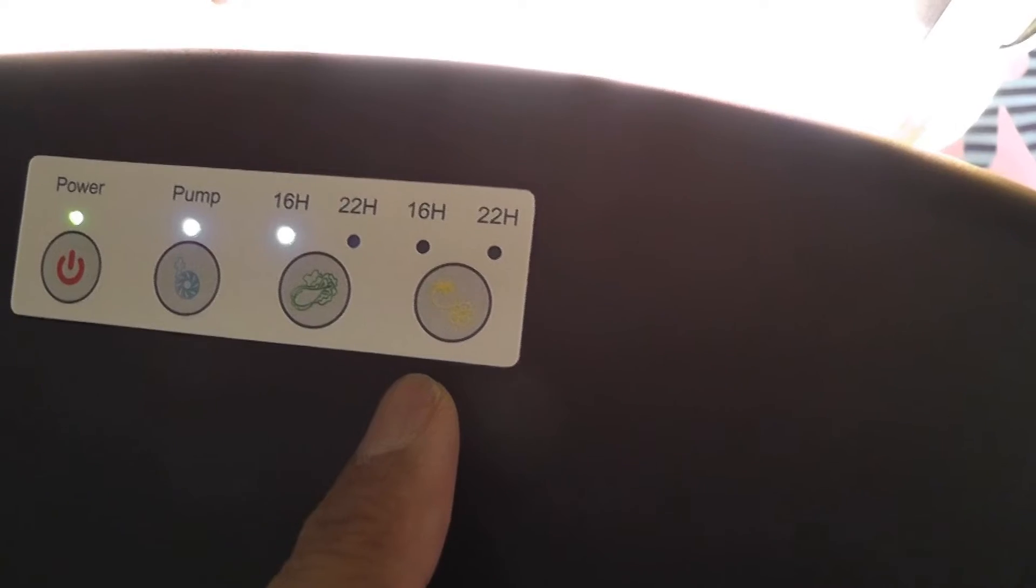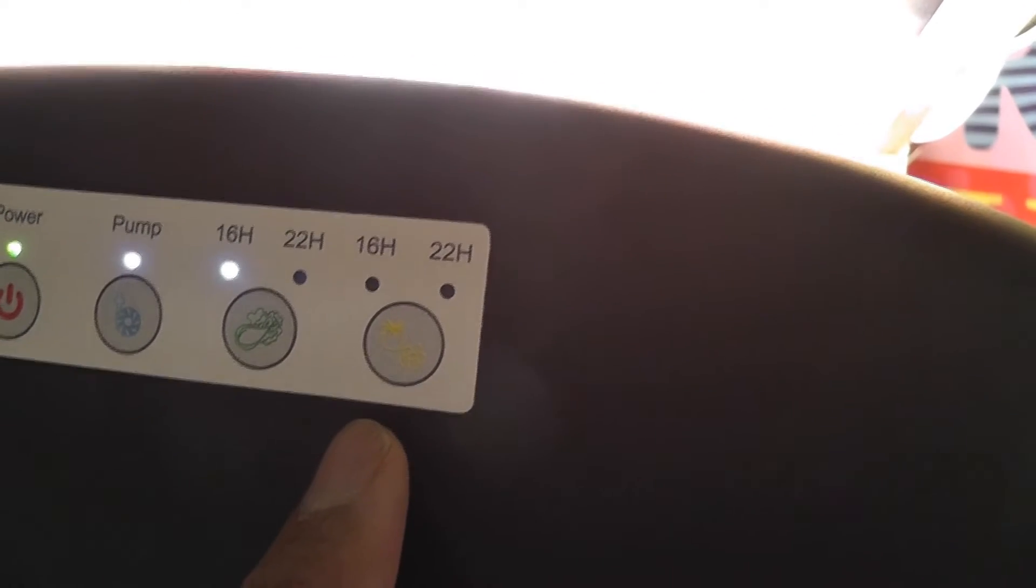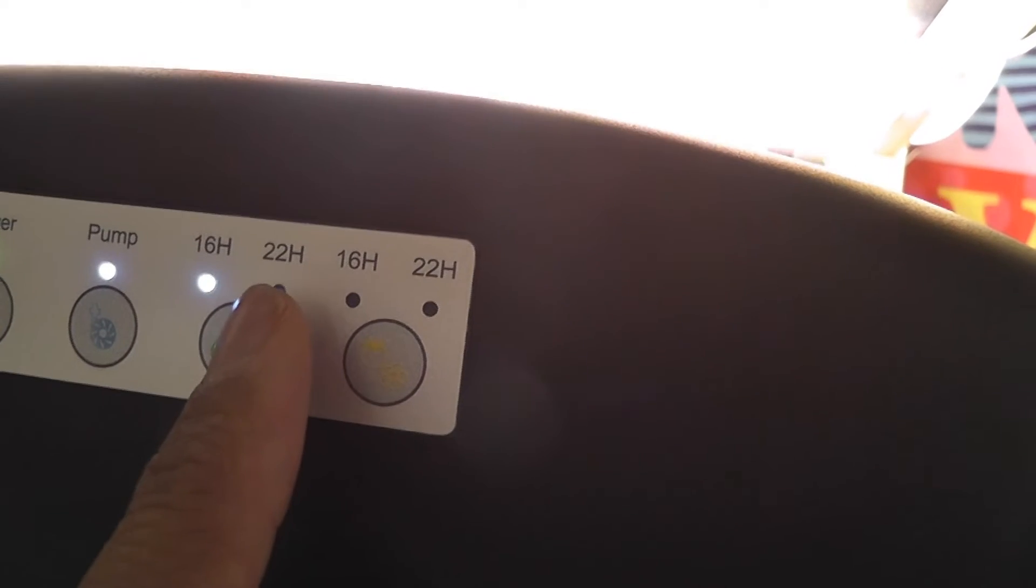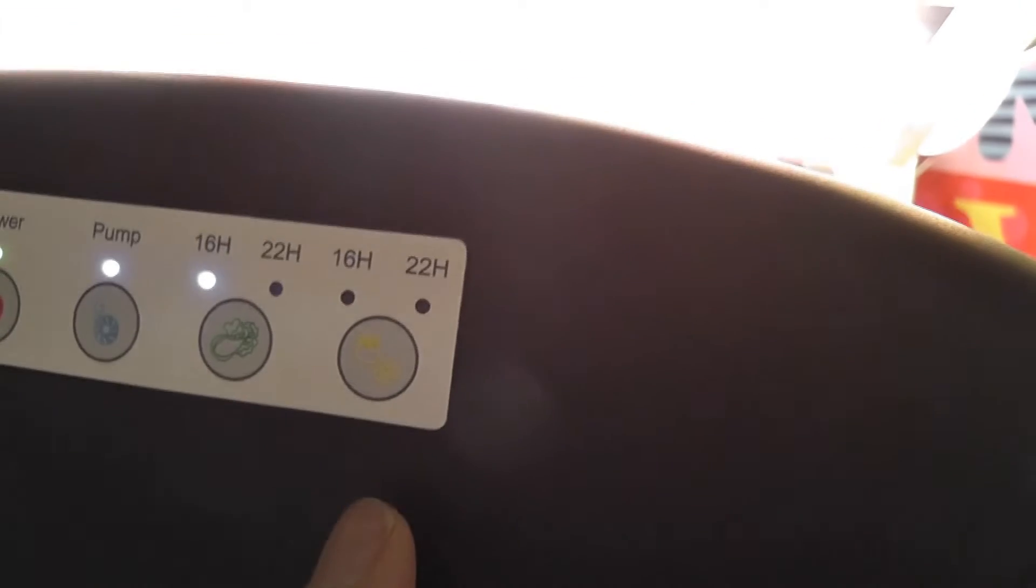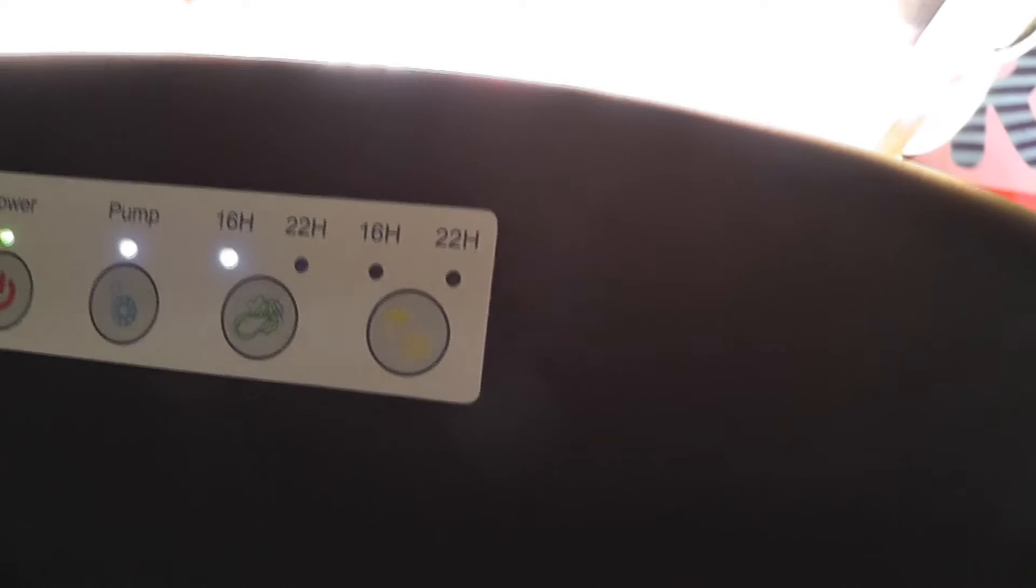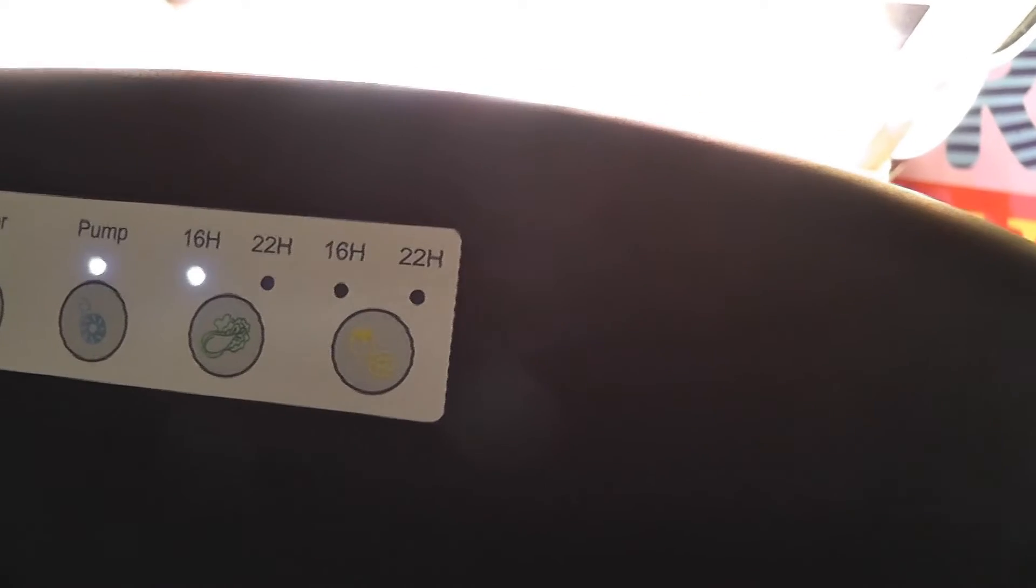But one interesting thing they added with these grow modes is how many hours we can turn on the lights. Basically there are two settings, one is 16 hours and one is 22 hours, and the same setting available for both grow modes. This seems very interesting. Normally I don't go more than 16 hours with any of my gardens but if somebody wants to go for 22 hours light, definitely there is an option.